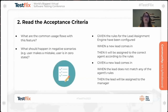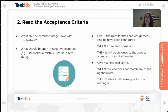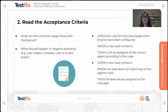The next step is to read the acceptance criteria. What are the common usage flows with the feature? What should happen in a negative scenario — for example, if a user makes a mistake or is in a zero state? For this Lead Assignment Engine, here are two examples of AC. Given the rules have been configured, when a new lead comes in, then it will be assigned to the correct agent according to the rules. And for negative AC: given a new lead comes in, when the lead does not match any of the agent's rules, then the lead will be assigned to the manager.